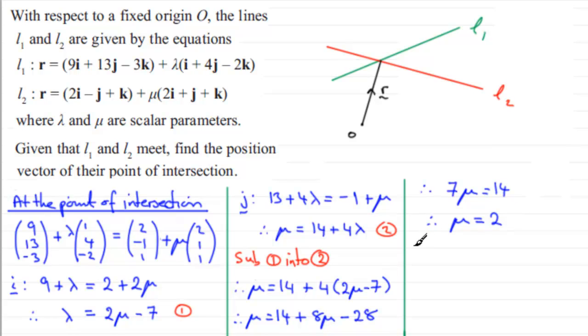And I can substitute this back into, say, equation 1. So sub into equation 1. And that means that lambda must equal 2 times 2 is 4, minus 7. That's going to give me minus 3. So lambda equals minus 3.